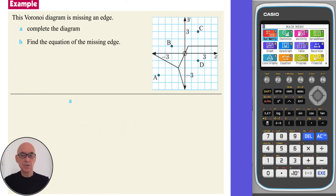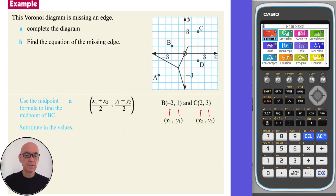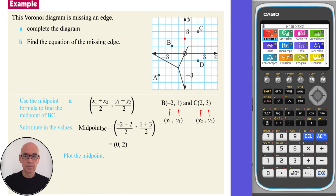In part A of this question, we are asked to complete the Voronoi diagram by drawing on the missing edge. Sites B and C are currently in the same cell, so the missing edge must be the perpendicular bisector of BC. Writing down the midpoint formula from page 2 of your formula booklet, and substituting the values, gives a midpoint of B and C at (0, 2). Plotting this point, and drawing the edge through this point and through the vertex at (0.5, 1), as shown on the diagram.